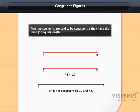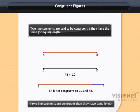Also, we can see that EF is not congruent to CD and AB. The converse of the above holds true. That is, if two line segments are congruent, then they have the same length.